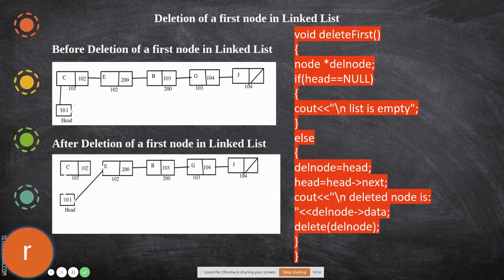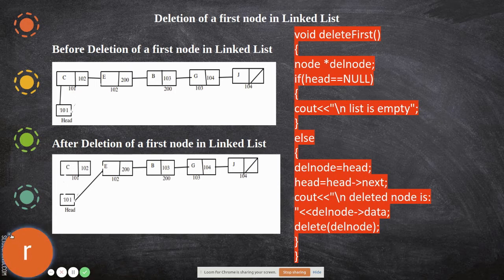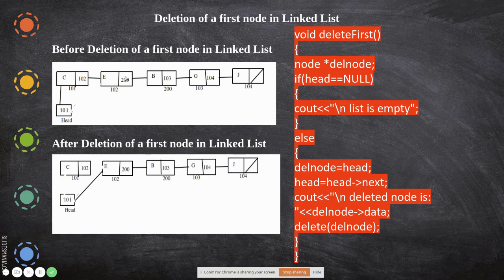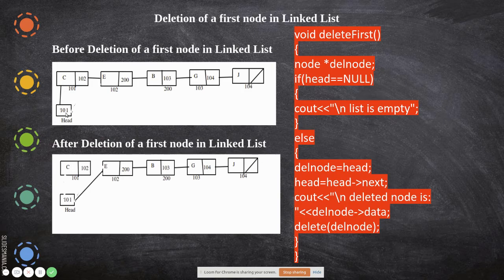So let us imagine this is our linked list. These are all the nodes, and each node consists of two fields: the information field and the next field, where the address of the next node is stored. Using this you go to the next node till you reach the end of the linked list. The end is indicated by the null pointer in the last node. The head is pointing to the first node.